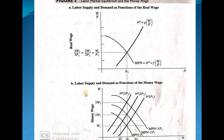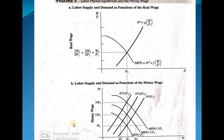Now we are on to this diagram and this is very, very important. If you observe this figure carefully, you're going to have a clear understanding of what I'm going to explain. We don't need any textual explanation here — this figure is sufficient. Observe the figure: at the lower side we have employment on the x-axis and money wage on the y-axis. Earlier we talked about real wage on the y-axis, but now we have money wage on the y-axis.